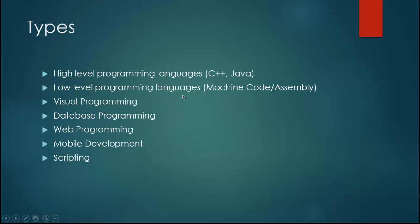The first thing you have to know is the different types of programming languages. There's a common fallacy that people who haven't programmed before believe — that if you know one programming language, you can program for everything, meaning for the iPhone, tablet, and all different platforms. That's not the case. There is no one programming language that can program for everything, nor is there one that is the best. Those are two misconceptions.